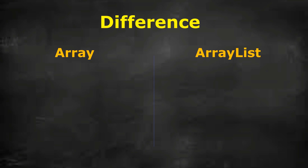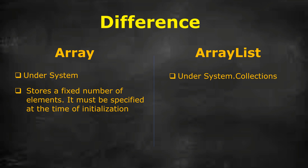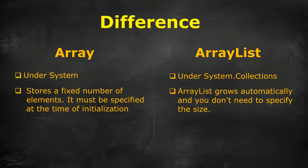In our previous video we talked about Array, and there are a few differences between Array and ArrayList. If you want to use Array, you must include the System namespace, while in ArrayList you must include System.Collections. In Array, you can store a fixed number of elements, while in ArrayList you don't need to specify the size. Array is strongly typed, meaning it can store only a specific type of elements, while in ArrayList you can store any type of items.